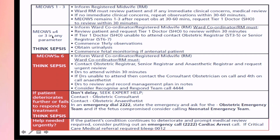If the score is three or more in any single parameter, you have to think of sepsis. In that case, the ward coordinator should be informed and must review the patient. If there is deterioration or clinical concerns, she will immediately inform the Tier 1 doctor or SCHO to review the patient.